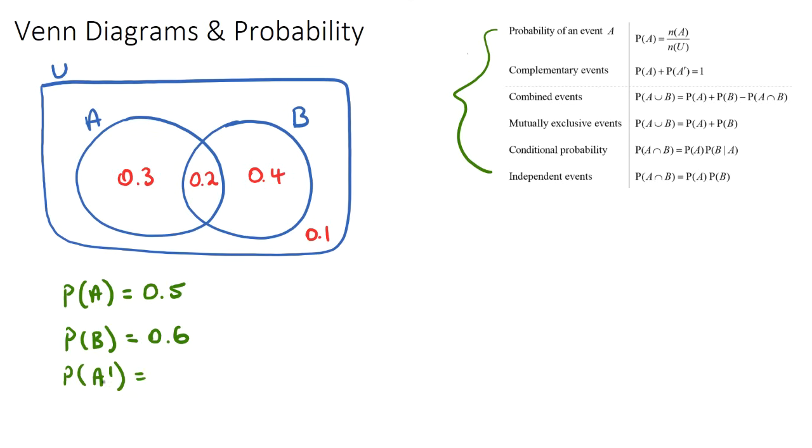This is going to be 1 minus the probability of A. So it's going to be 1 minus 0.5, therefore 0.5. And the probability of not B would be 1 minus the probability of B, which is pretty much everything not in B, so it would be the 0.1 and the 0.3 which is 0.4.